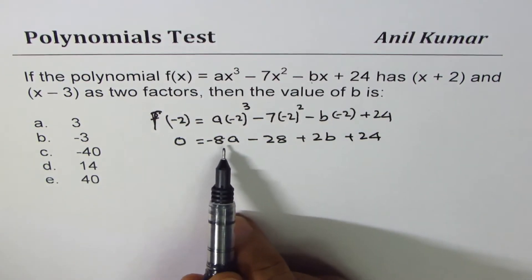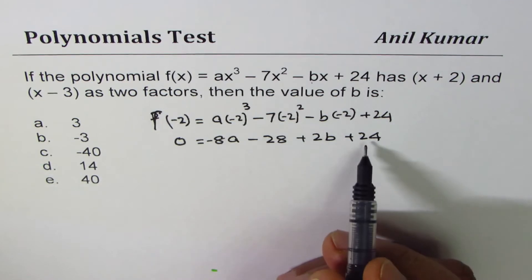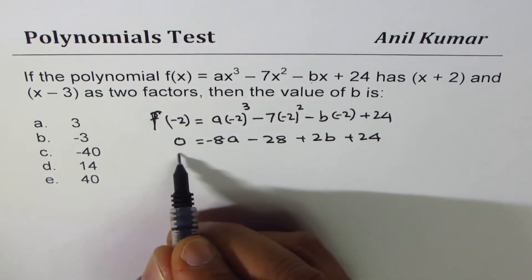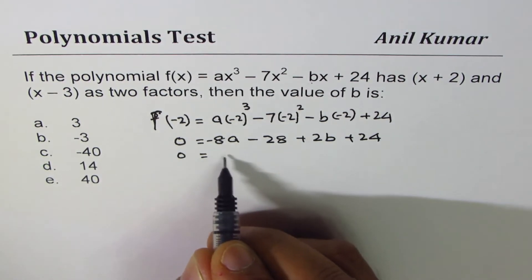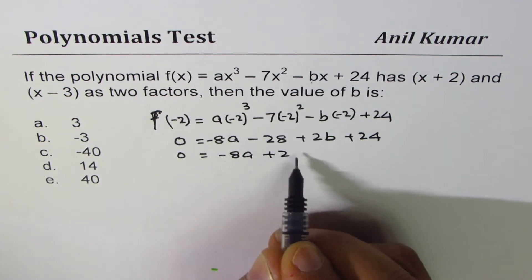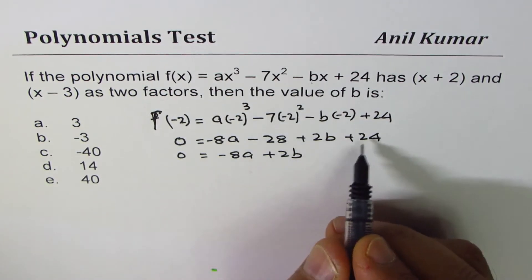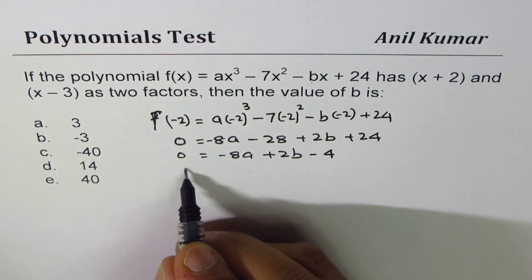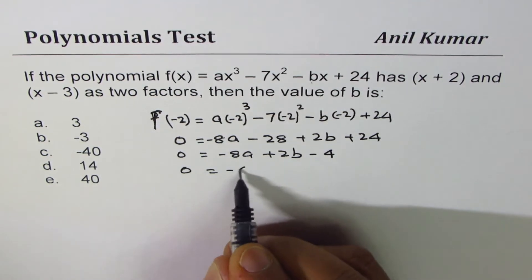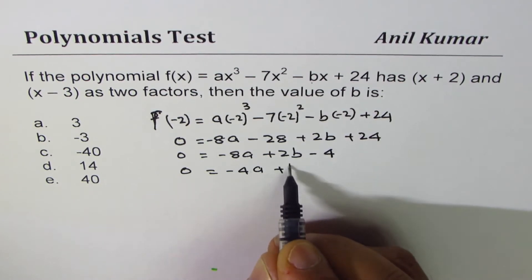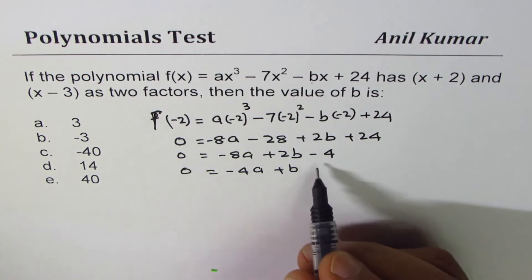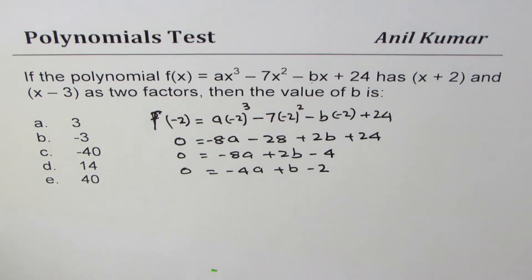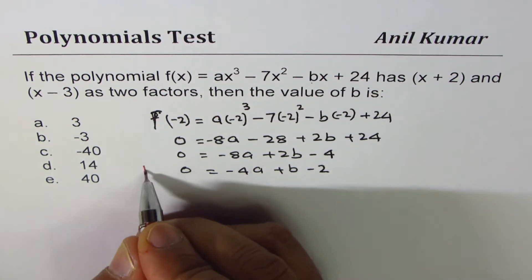we get 2b + 24. Now, we have a relation between a and b here. We can actually simplify this a bit. We have -8a + 2b. Combining these two terms, we get -4. We can divide by 2, and then we get -4a + b, and then this becomes -2, right?